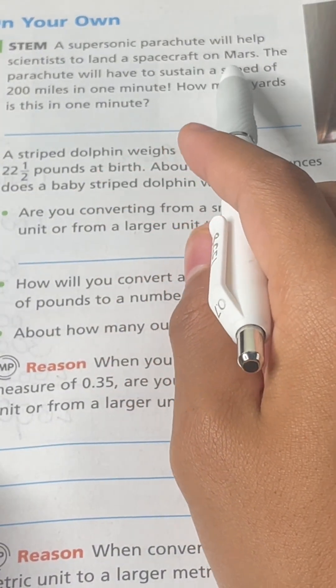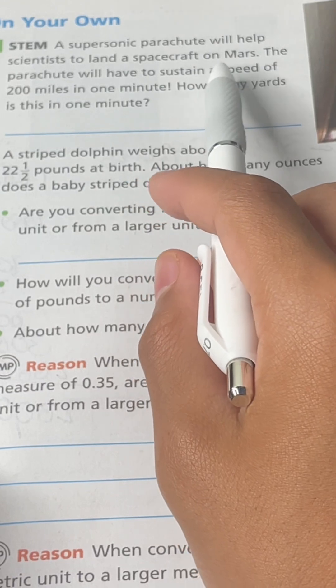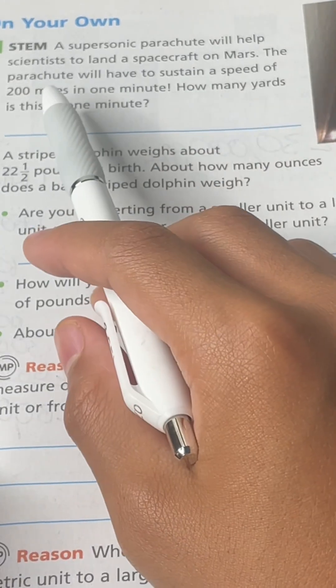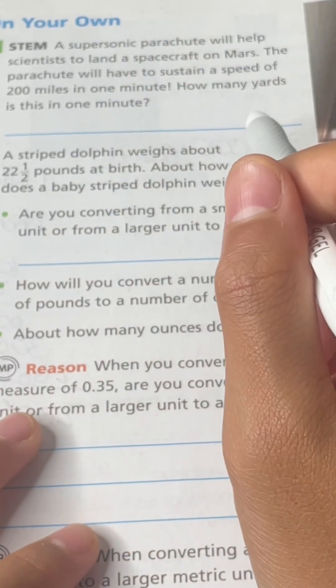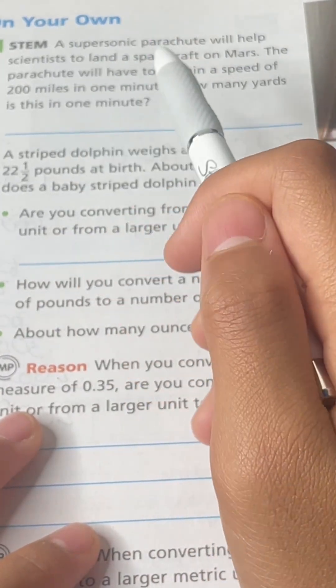A supersonic parachute will help scientists land a spacecraft on Mars. The parachute will have to sustain a speed of 200 miles in one minute. How many yards is this in one minute?